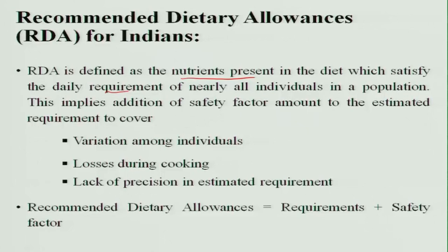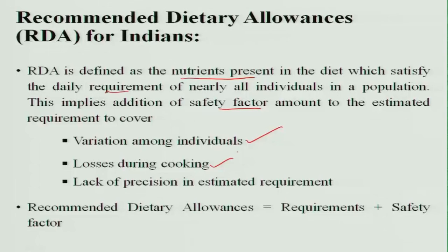These recommended dietary allowances are made generally — they are not taken into consideration for an individual. This implies the addition of a safety factor amount for the estimated requirement to cover the variation among individuals, who may have different height, weight, and physiological status. Then there are losses during cooking, and lack of precision in the estimated requirement. We cannot precisely estimate the requirement, so that is why we have the safety factor.